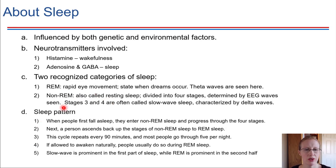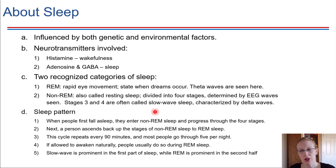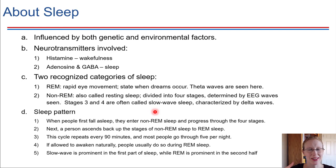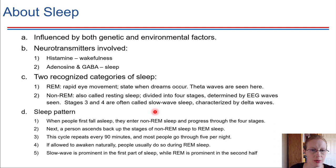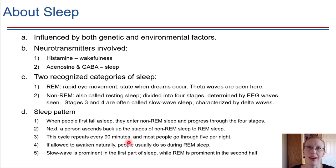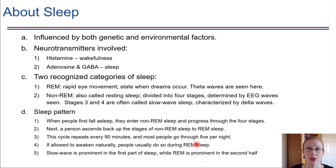When you first fall asleep, you enter non-REM sleep — you're not dreaming right away. You progress through four stages of non-REM sleep, then come back up through them, and then enter REM sleep, which completes a full sleep cycle. Generally, a sleep cycle takes about 90 minutes, and most people go through about five of these cycles per night. If we wake up naturally, without an alarm, we tend to do so during REM sleep, towards the end of a natural cycle, which is why we feel well rested.